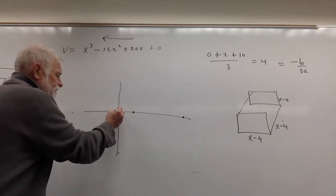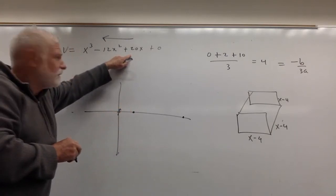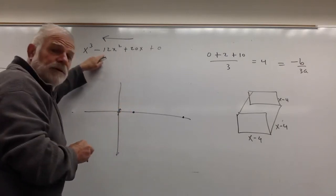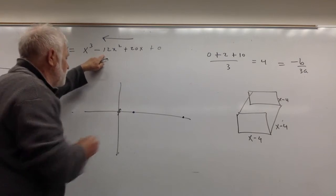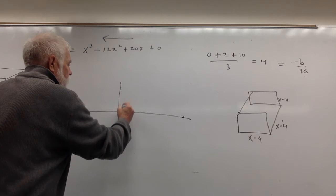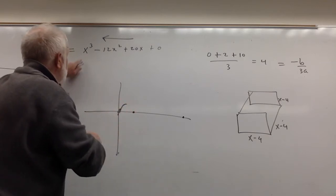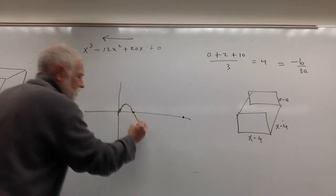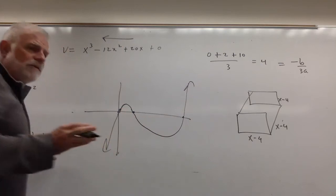Going up at 20 to 1 at that instant - you can prove that without calculus. Minus 12x² is going to give it that concave down trajectory, and then x³ eventually wins the day. So you've got your general shape.